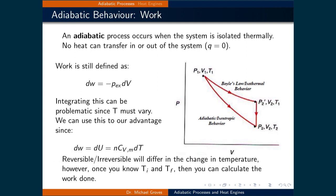The difference between reversible or irreversible processes is that the change in temperature will differ. As you can also see in the figure on the right, the area under the adiabatic curve would be less than the area under the isothermal curve. This is just one example. It's possible to extract more work from an adiabatic process compared to an isothermal one, using different conditions.